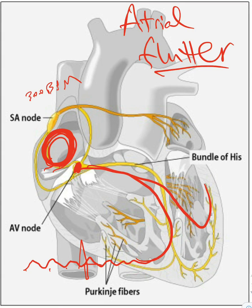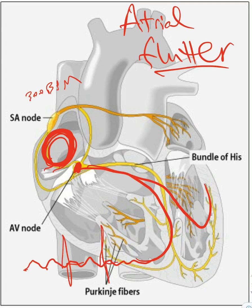If the AV node is quick — meaning it lets electricity pass through rapidly — you might see a QRS every two atrial flutters: one, two, QRS; one, two, QRS. In this case the patient will be really symptomatic: chest pain, shortness of breath, palpitations, all of that.